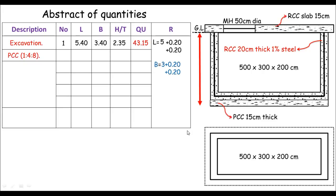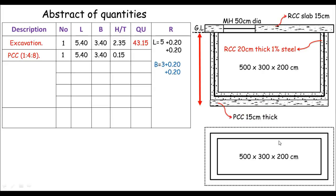The next item is PCC work. The tank is only 1, so the number is 1. The length and breadth of PCC work are the same as excavation: 5.40 meters and 3.40 meters respectively. Only the height changes — the PCC work is 15 centimeters or 0.15 meters thick. Multiplying these four columns gives the PCC work quantity of 2.75 cubic meters.